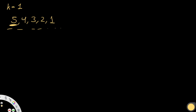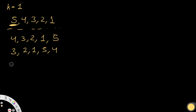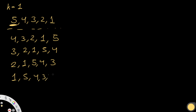Let's look at all the possible values. We start with 5, 4, 3, 2, 1. Now we move 5 to the ending, giving us 4, 3, 2, 1, 5. Now we move the 4 to the ending: 3, 2, 1, 5, 4. Then move the 3: 2, 1, 5, 4, 3. Then move the 2: 1, 5, 4, 3, 2. And finally move the 1, giving us 5, 4, 3, 2, 1 — back to the original. These are all the combinations, and we just keep repeating them over and over again.